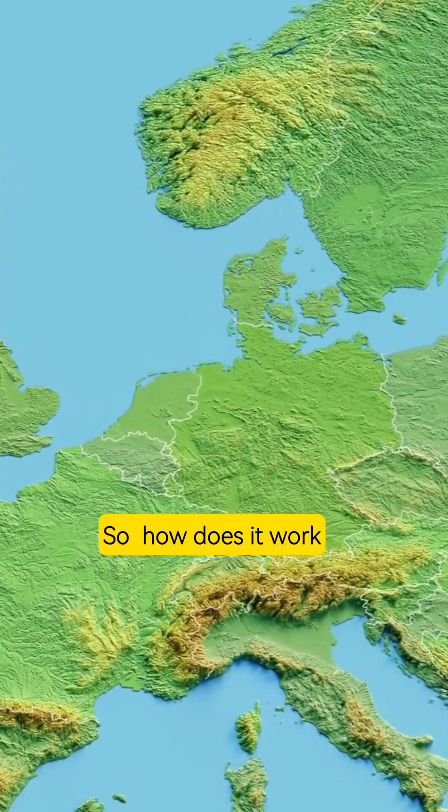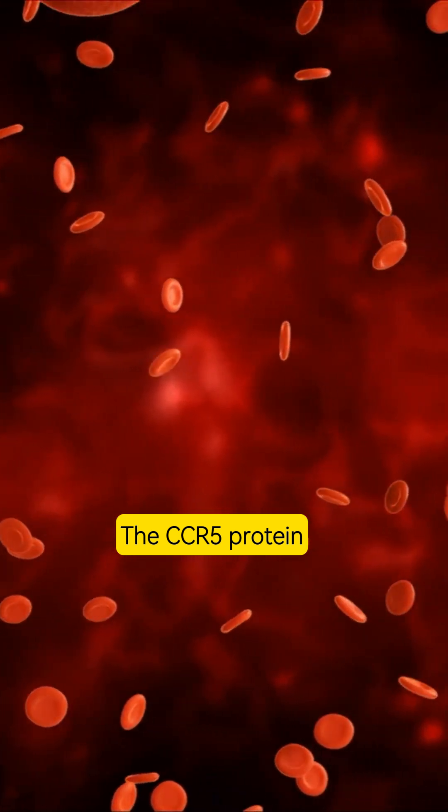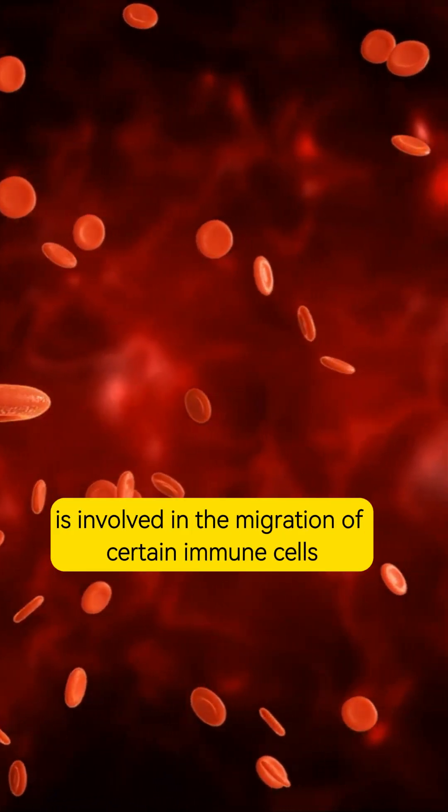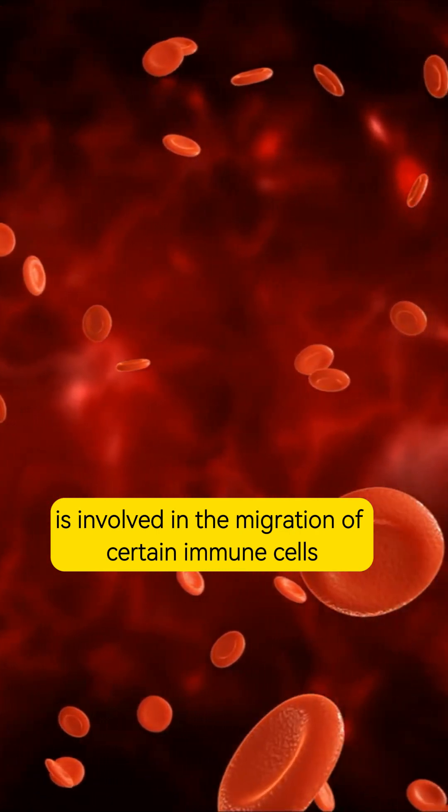So, how does it work? The CCR5 protein, encoded by the CCR5 gene, is involved in the migration of certain immune cells.